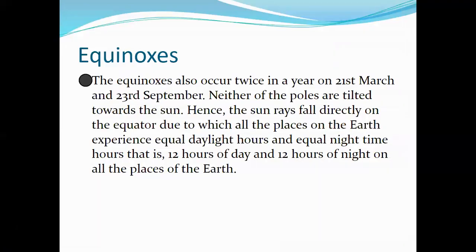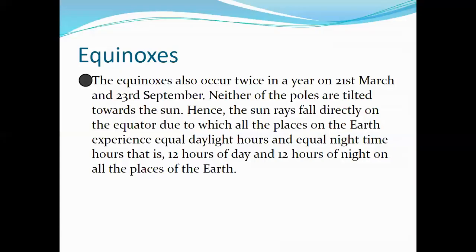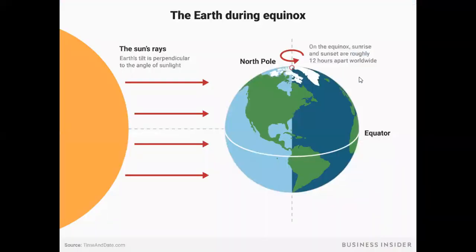The next topic is the equinox. Equinox means equal day and night. The equinox also occurs twice in a year — on 21st March and 23rd September. On these dates, neither of the poles is tilted toward the Sun.